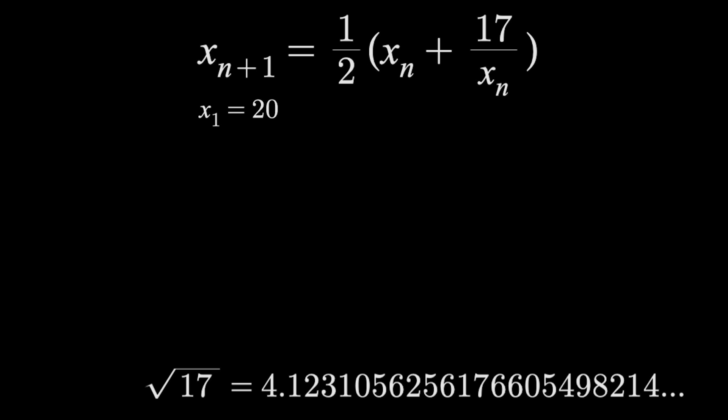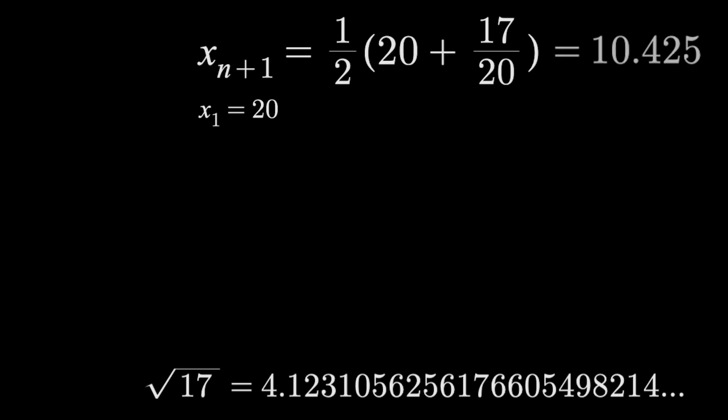Then we plug that into the formula for x_n, where n equals 1 currently, to get this expression here. We solve it and get 10.425. That is x_2, simply the next number in this process, which is not what we're looking for, but it is closer to root 17 than 20 was.